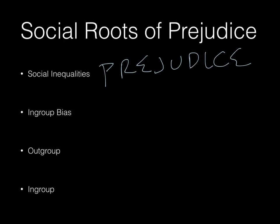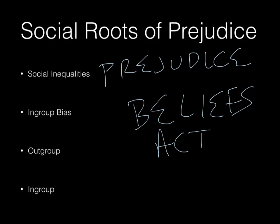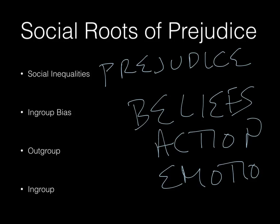Prejudice is a combination of three things: beliefs, actions, and emotions. You have to have these three things in order to be prejudiced. If it's just a belief, it's a stereotype. And if it's just actions, it's discrimination. But if you get a combination of all three, then this is what we describe as prejudice.